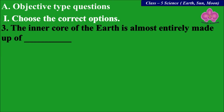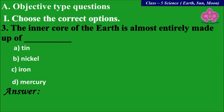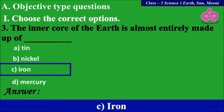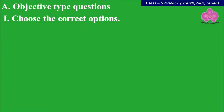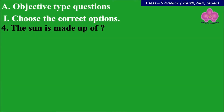The inner core of Earth is almost entirely made up of dash. Option A: Tin, B: Nickel, C: Iron, D: Mercury. You can write your answers in the comment section. The answer is C, Iron.